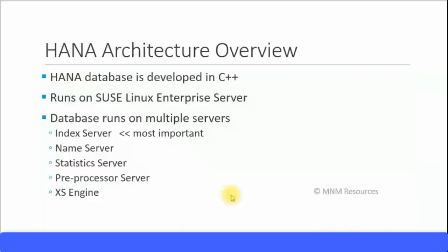Let's look at the HANA architecture. The HANA database was developed using C++, which is a programming language that can be run on many different platforms. The operating system is SUSE Linux Enterprise Server. The actual database runs on multiple servers; the most important server you need to know is called the index server. There are four other servers: the name server, statistics server, preprocessor server, and the access engine. Let's look at all of this in a picture to see how they all fit in.